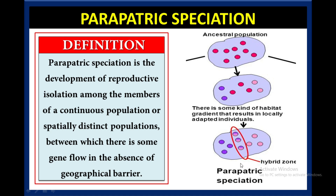If you look at this schematic diagram, you can see this is a region or a population in which some individuals are living, and basically this is a hybrid zone or reproductive zone. These individuals are coming into this hybrid zone where they are meeting with each other. In this population, the geographical barrier is absent. Due to the reproductive zone, individuals are coming together and gene flow is occurring, and new species are forming. This is how parapatric species form.